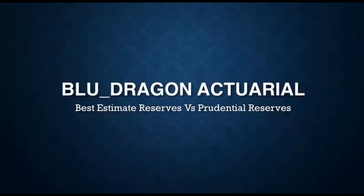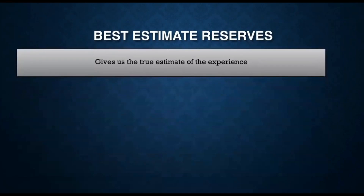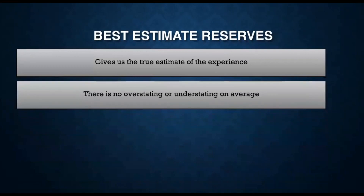Let me share my screen. We'll be discussing best estimate and prudential reserves. The best estimate reserve is a reserve calculated using assumptions that give us the real or true estimate of future experience. Because it gives us the real estimate, we also term it a realistic reserve. These assumptions are calculated to ensure that, on average, they do not overstate or understate the actual experience we expect in the future.